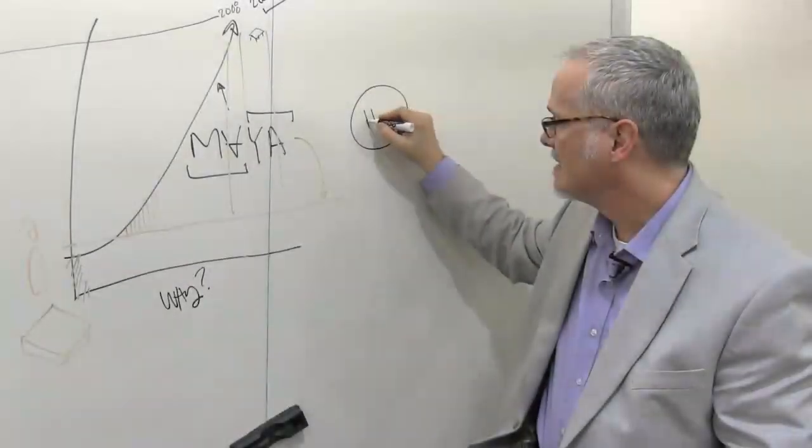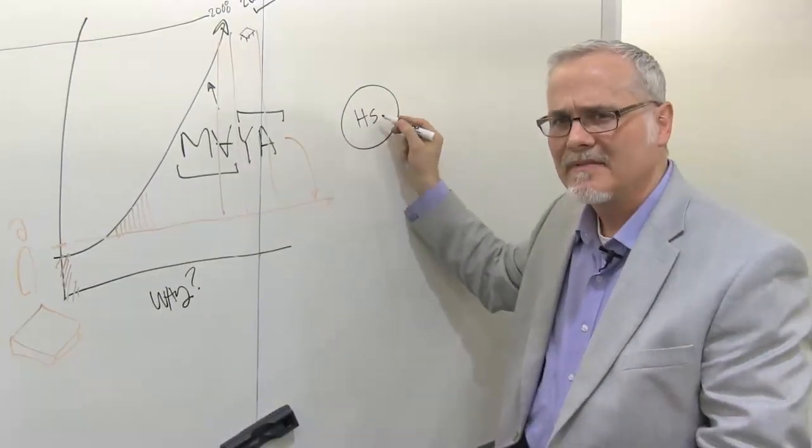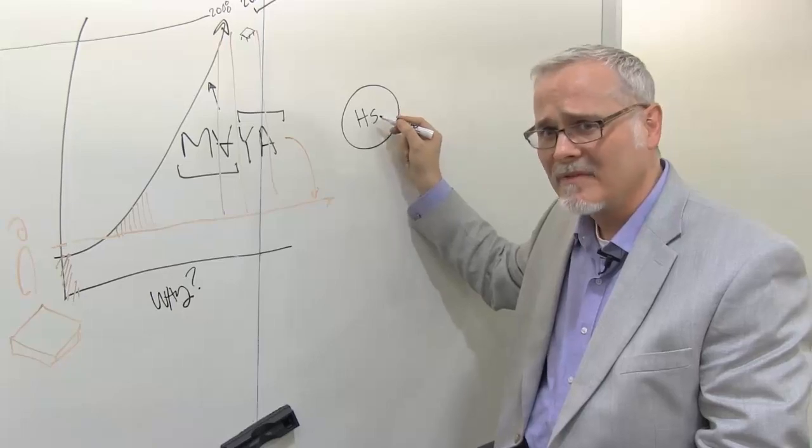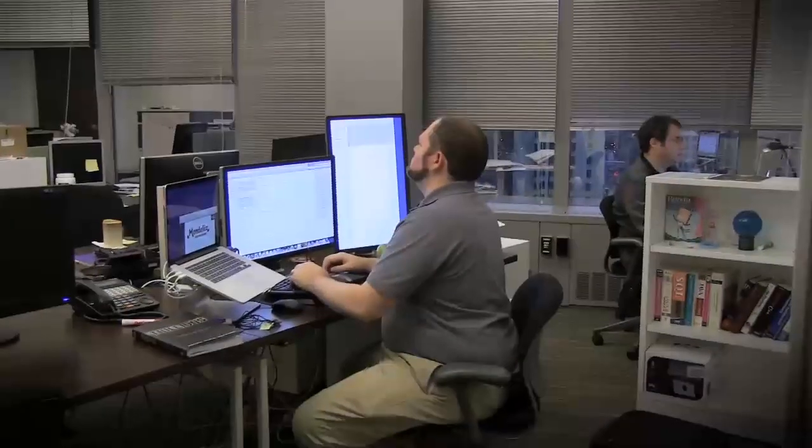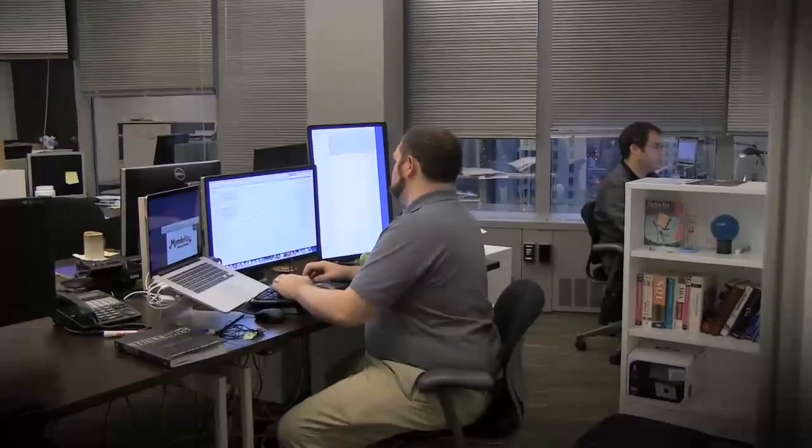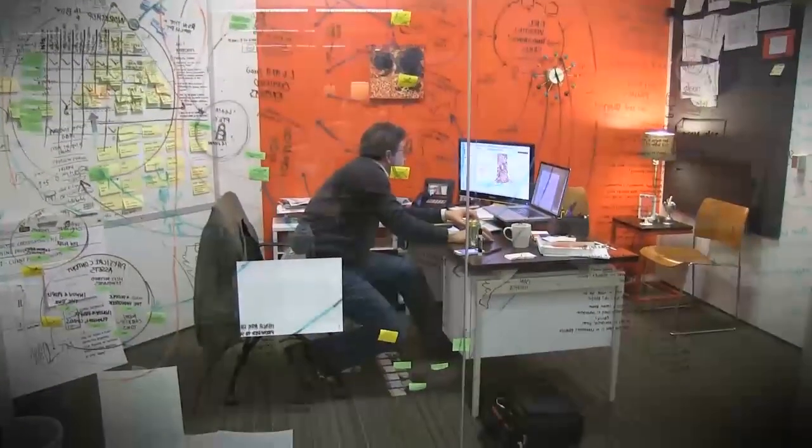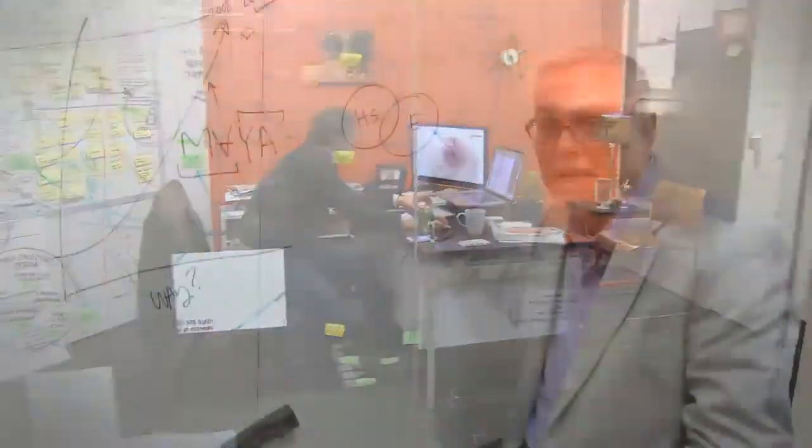We have human scientists, so those are things like cognitive psychologists, anthropologists, ethnographers, people who study how people think. And then we have engineers, so we have electrical engineers, mechanical engineers, computer scientists, mathematicians, people who study how you make stuff.